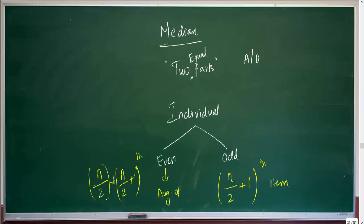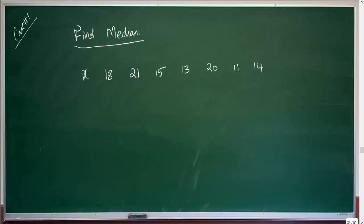To understand this, let's take a simple example. Find the median for this individual series of data: X = 18, 21, 15, 13, 20, 11, and 14. In order to find the median, you have to first ensure the given series of data is in ascending or descending order. This data is neither in ascending nor descending order, so let's arrange it first.